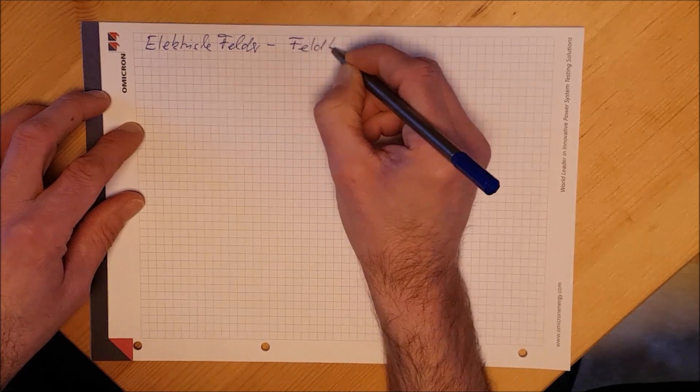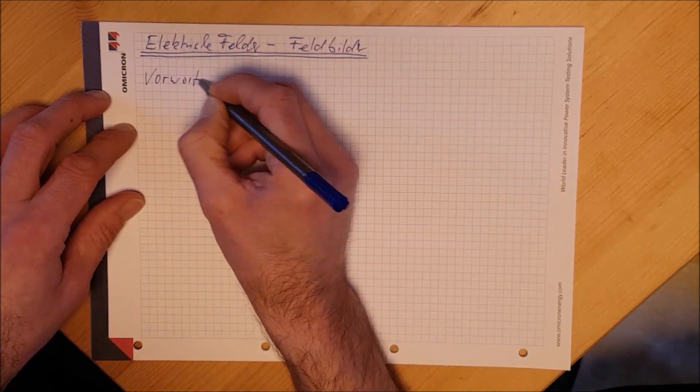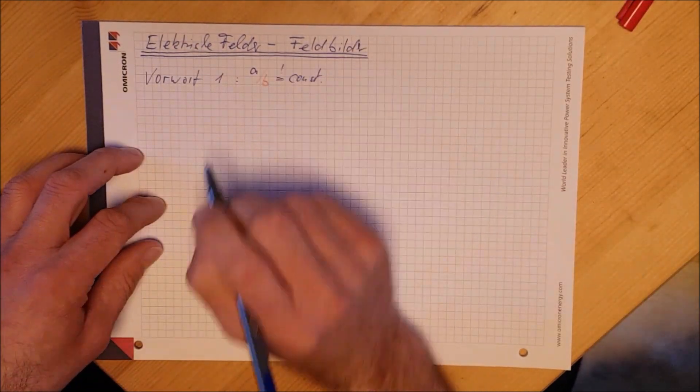Elektrische Felder, Feldbilder. Vorwort 1: a zu b gleich konstant.